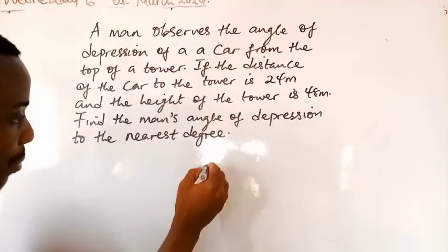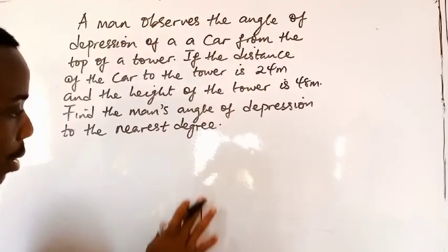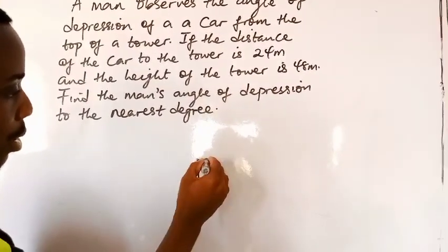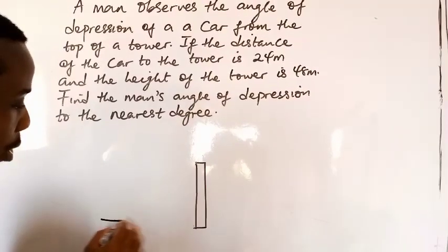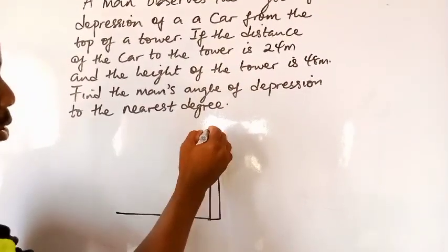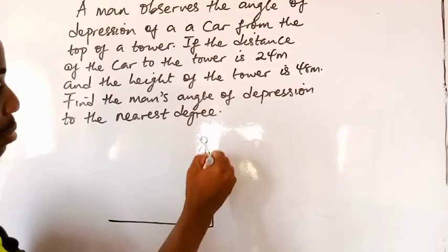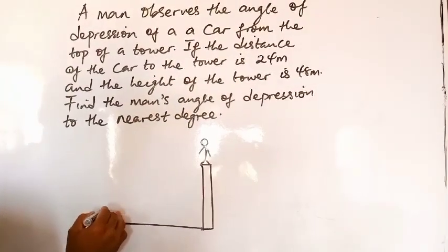So now, if this is the tower, and then this is the horizontal ground. This is the man, and then this is the car.